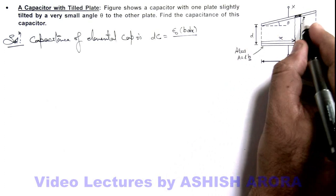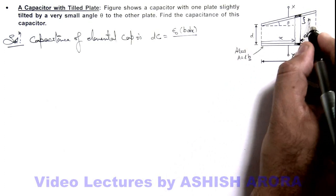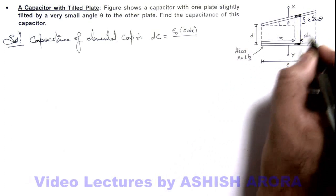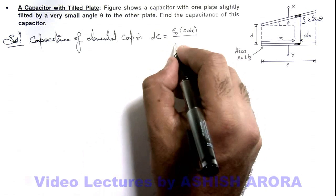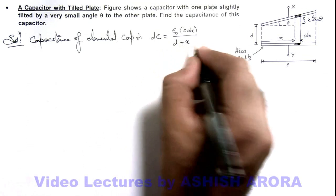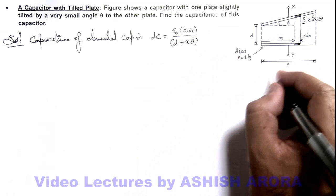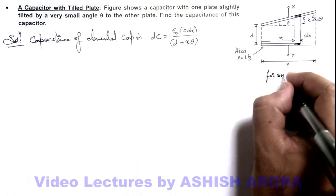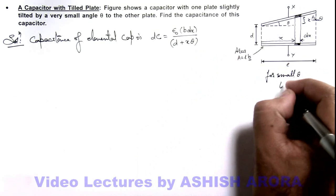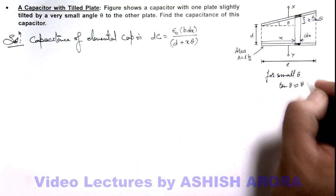And this additional separation is, if this is x, this can be taken as x tan theta. So here we can write it as d plus x tan theta, and as theta is small we can write it as x theta. So here we can write for small theta, tan theta is approximately equal to theta.